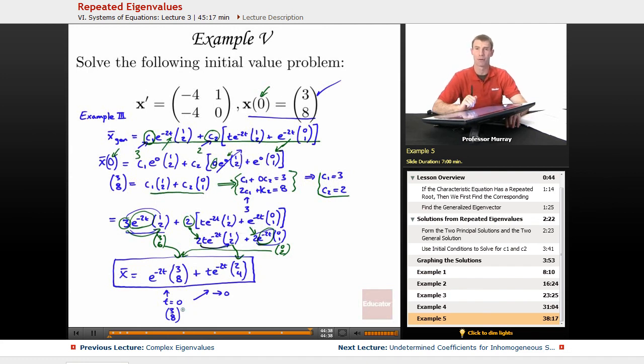It's also easy to check if I plug in t = 0 in here. This term would drop out because of the t outside, this term would turn into 1 and I'd get (3, 8). So it does check that I matched the initial condition that I was given.